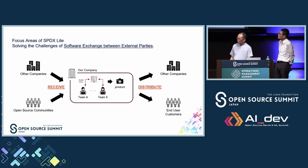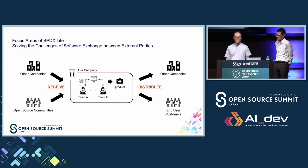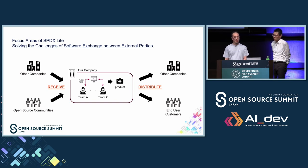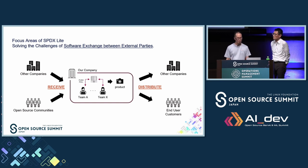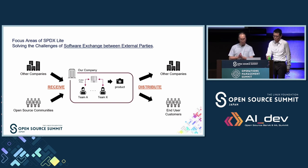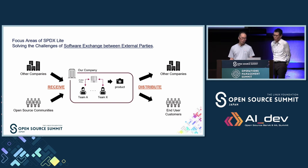With this background, we'd like to introduce SPDX Lite, which is part of the SPDX project from version 2.2. SPDX Lite is a result of discussions with OpenChain Japan communities on how to effectively deliver software information between and across complex software supply chains. We believe that SBOMs require different things when they are received versus when they are delivered.